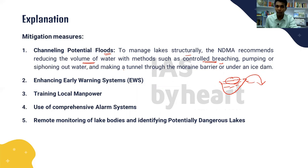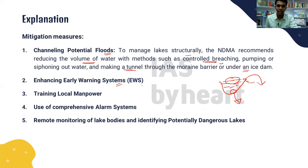Other mitigation measures include enhancing early warning systems to warn the vulnerable population near such disaster-prone areas, training local manpower, and using comprehensive alarm systems and remote monitoring using satellites. Through satellite monitoring we can identify potentially dangerous lakes and take mitigation measures in advance to prepare for such disasters.